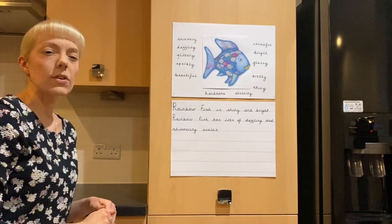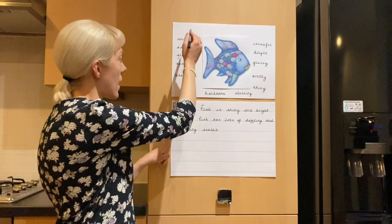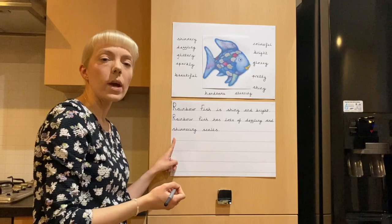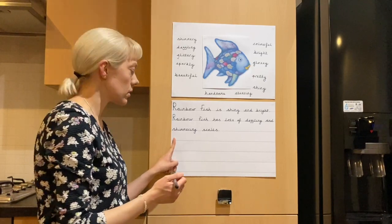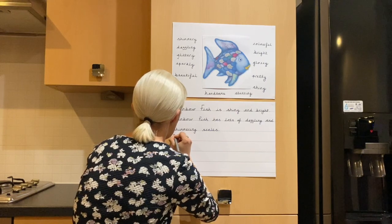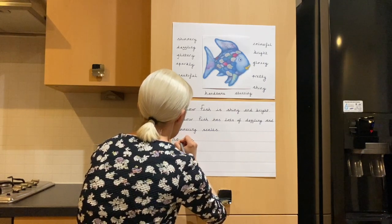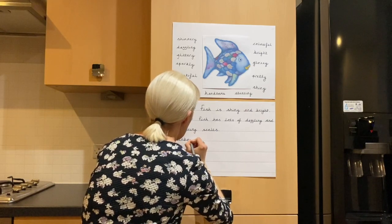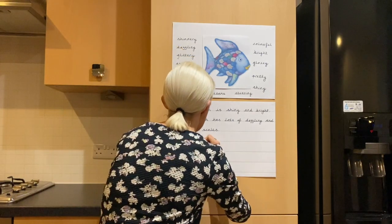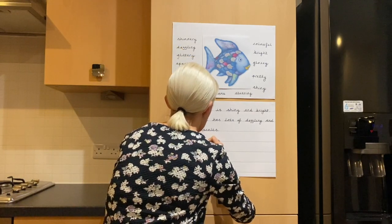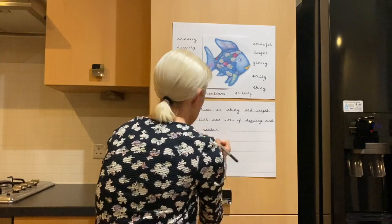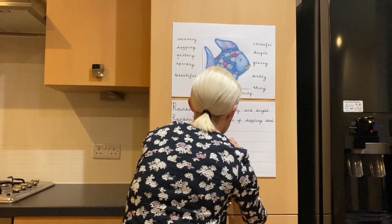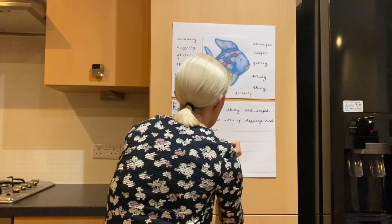Okay, I'm going to think of another sentence now using some more of my adjectives from up here. Rainbow Fish looks stunning with his glittery silver scales. R, A, N, B, O — rainbow — fish — F, I, SH — fish, looks — L, U, K, S — looks.